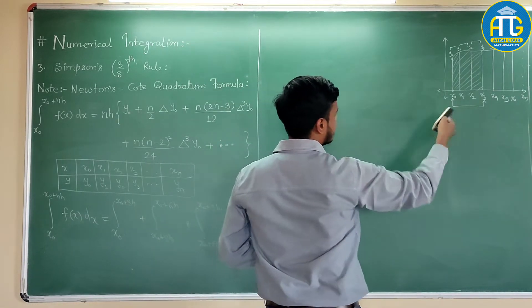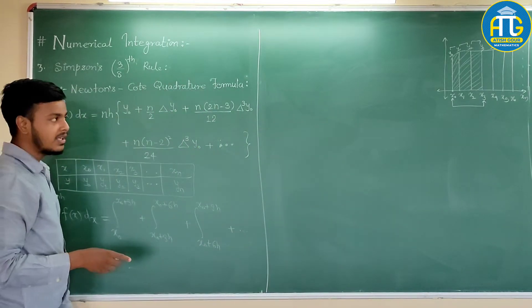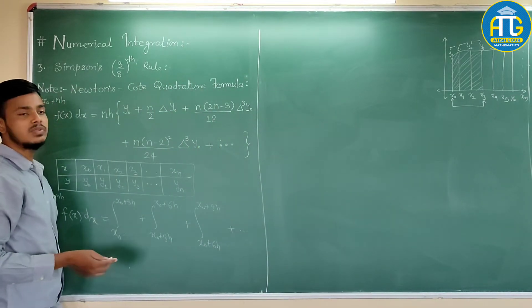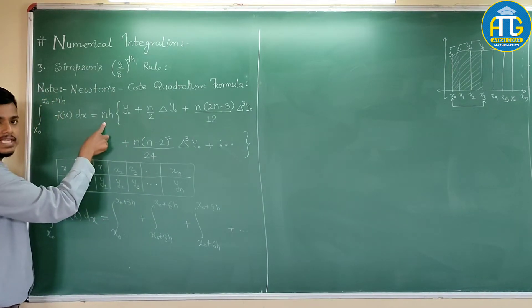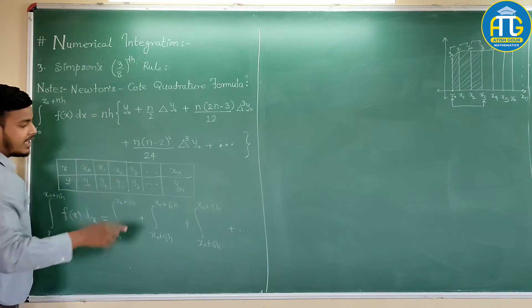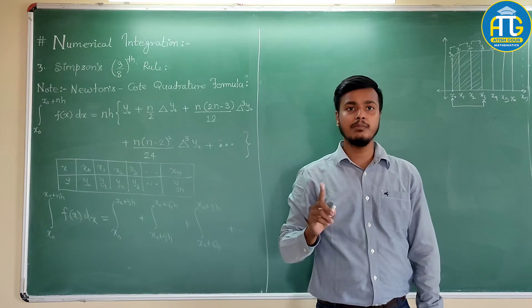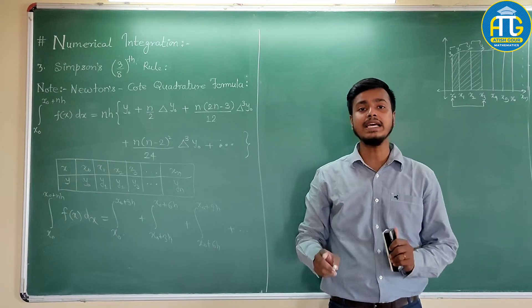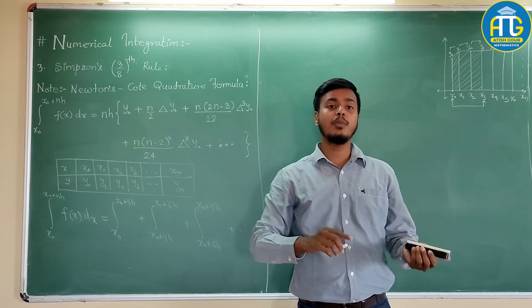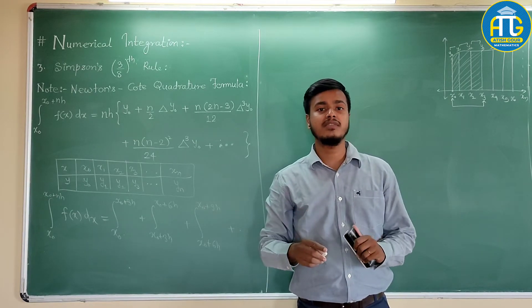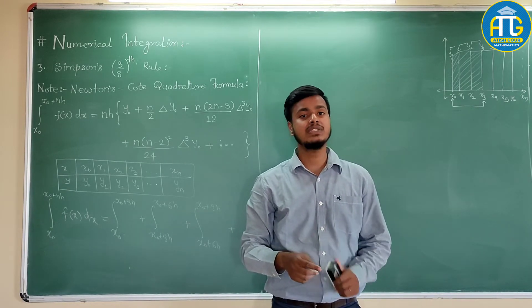So for n is equal to 3, if you have this to be found out, we will go for the Newton's Cotes quadrature formula. And for n is equal to 3, I would use this formula and substitute n is equal to 3. At the end of this learning video, I would make one important remark that would really help you in guessing which problems to solve by which method, whether to apply Simpson's one-third or whether to apply Simpson's three-eighth rule.